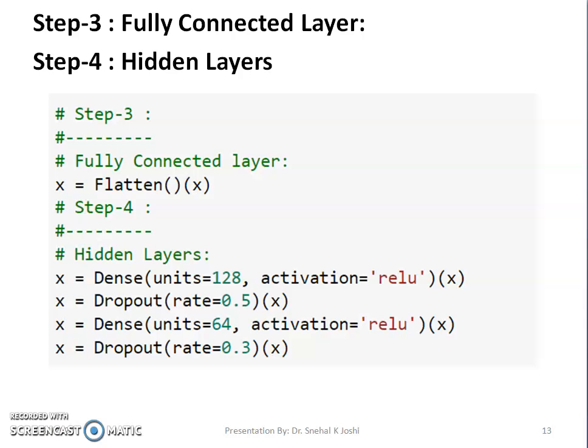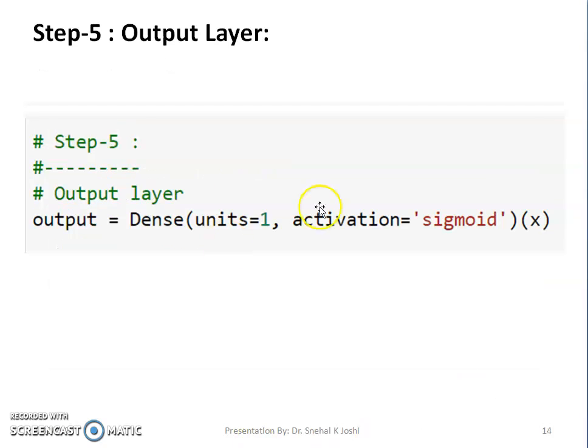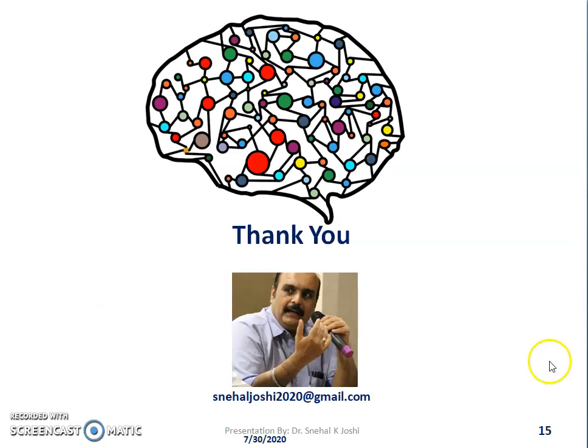Now it is time for output. Let us understand the output layer. It is quite simple. It is having a single node. Since this is a binary classification problem where we obtain output as normal image or pneumonia image in terms of 0 or 1, we have sigmoid as our activation function.